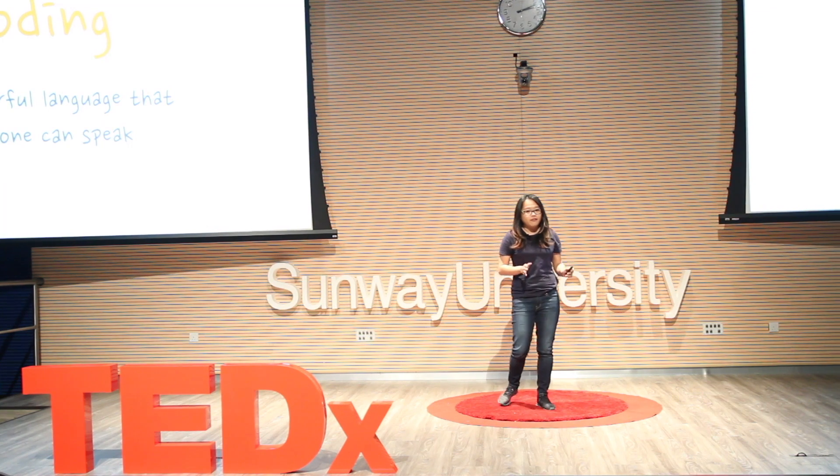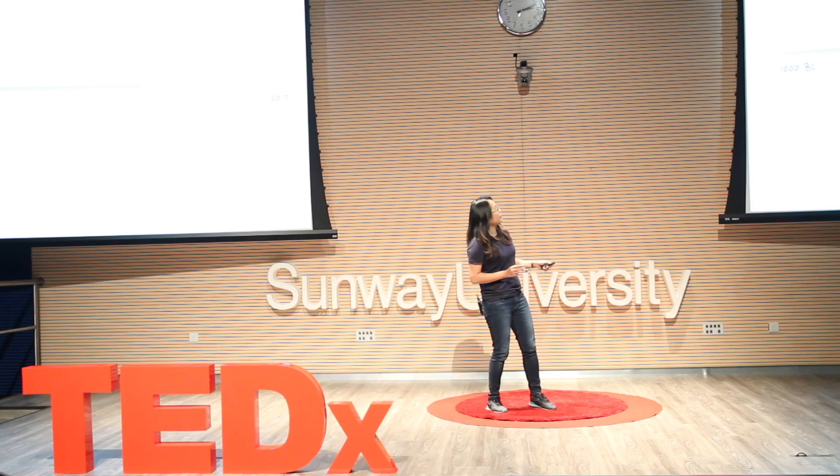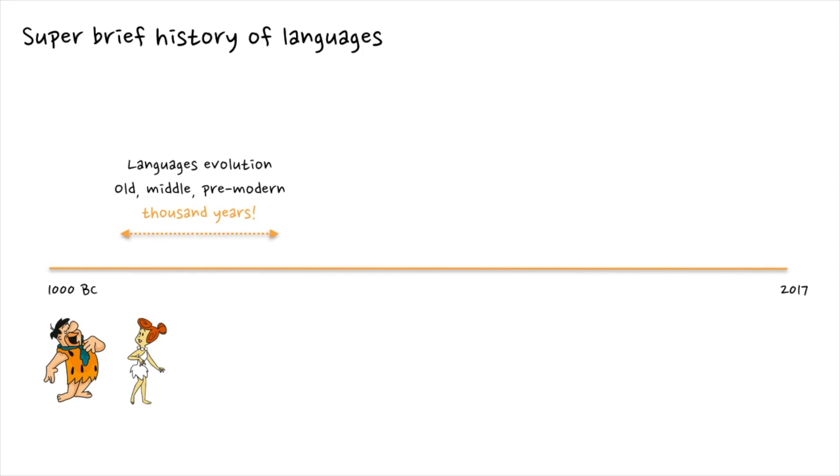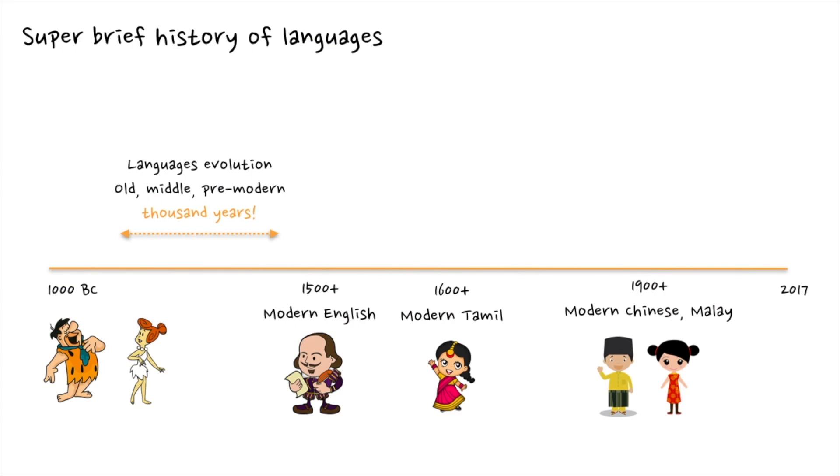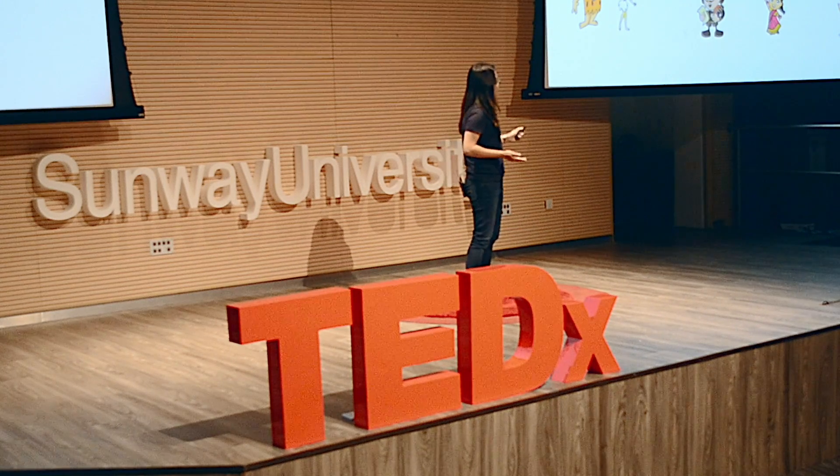Before I start talking about coding language, let's talk about the history of human language. Since thousands of years ago, humans invented language to communicate. Since then, language has changed, evolved, and updated according to society's needs. For example, during ancient times there wasn't even a word called 'TV,' but now we have it. Language has evolved into the modern English, Tamil, and other modern languages we speak now.